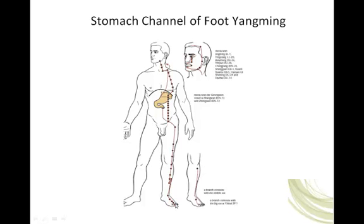There is a branch that leaves stomach 36 — an internal branch that connects to the lateral side of the third toe. And there is an exit branch that leaves the exit point, stomach 42, at the high point of the dorsum of the foot. It travels to connect with spleen 1, which is on the medial side of the nail of the great toe.